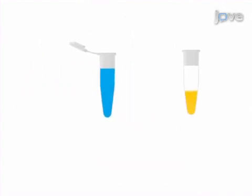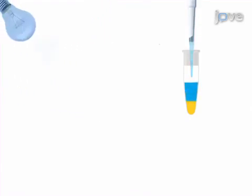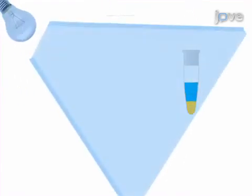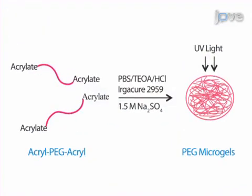Next, sodium sulfate is mixed in and the solution is placed under UV light to cross-link for 30 seconds. Following cross-linking, a cloudy layer on top of the solution will form which contains the microgels.